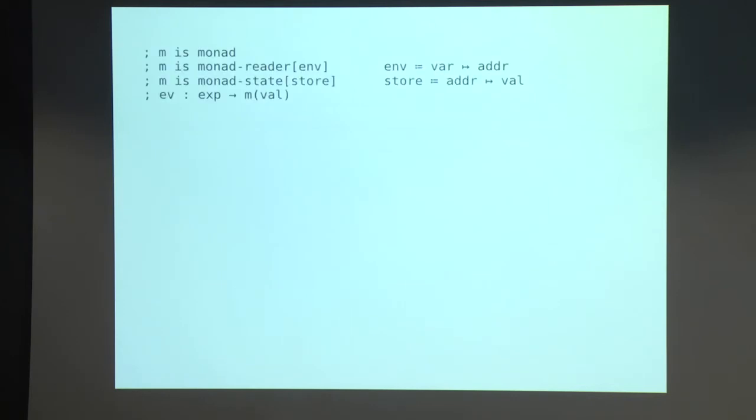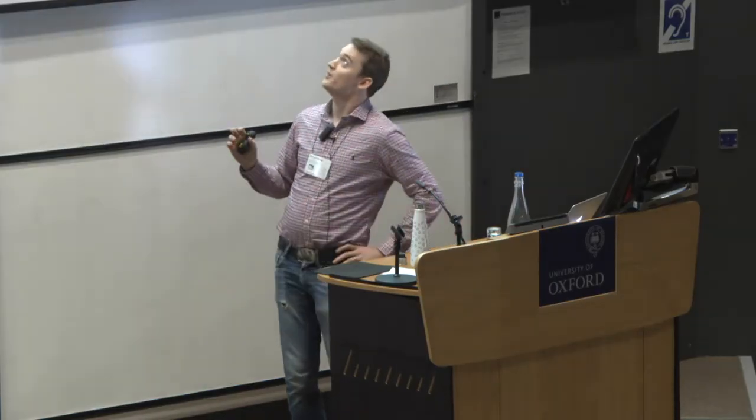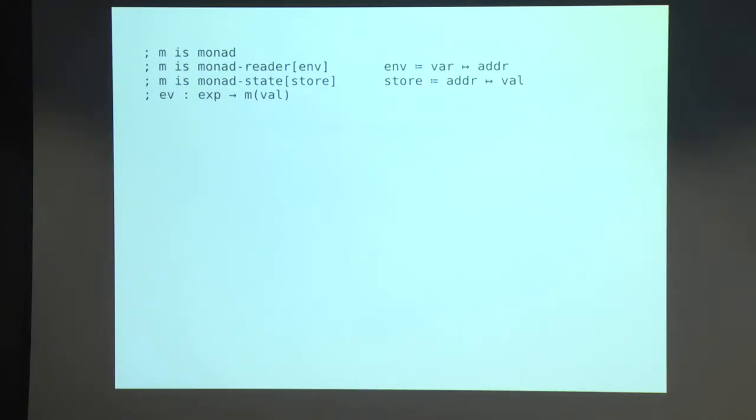So I'm going to do this in Racket, a great functional programming language that you all love. And I'm going to write comments for some things that you may have written in actual code in Haskell. So I'm going to assume that we have some monad m. And I'm going to assume some monadic effects for reader and state for the environment and store. And here's my type signature. It's a monadic function from expressions to values.